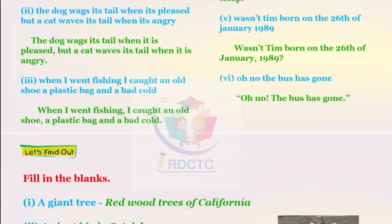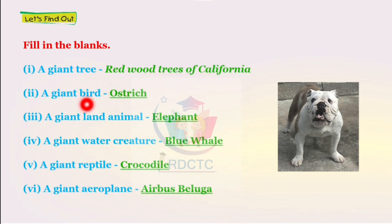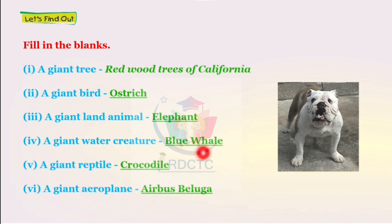And now we see the next topic, 'Let's Find Out.' Fill in the blanks. A giant tree is the redwood tree of California. A giant bird is the ostrich. A giant land animal is the elephant. A giant water creature is the blue whale. A giant reptile is the crocodile. A giant aeroplane is the Airbus Beluga.